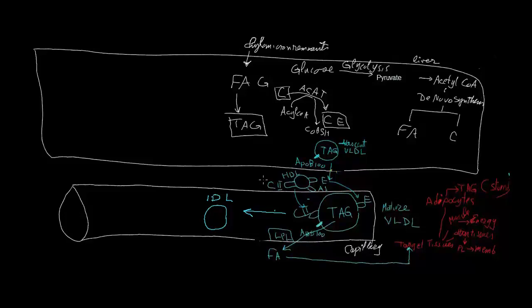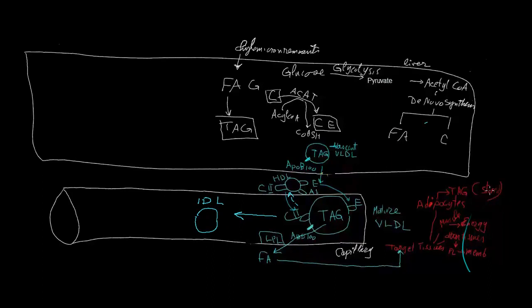The C2 returns to the high-density lipoprotein. When C2 returns to the HDL and triacylglycerol has been substantially reduced by the action of lipoprotein lipase, the mature VLDL now is converted into another particle which we call IDL, or intermediate-density lipoprotein.